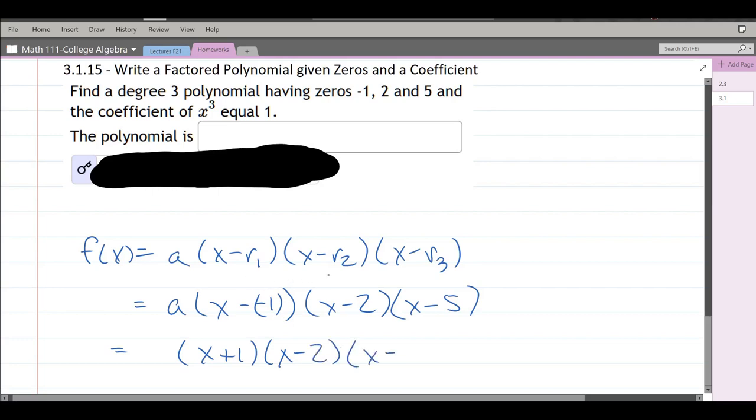You can tell that this polynomial is degree 3. If we distribute all of it out we'd have an x cubed overall as our leading term.